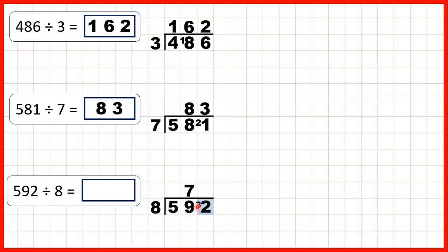So now we just need to divide 32 by 8. 32 is exactly 4 times 8, so we write 4 in our answer line to give us our answer of 74.